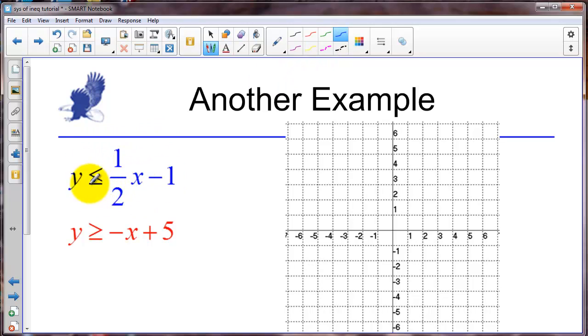So this is in the y equals mx plus b format. So we have our y intercept for the first inequality at negative 1. And we have a slope of 1/2. So up 1, over 2. Up 1, over 2. Up 1, over 2. We could go backwards.